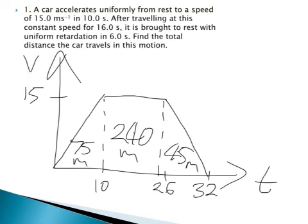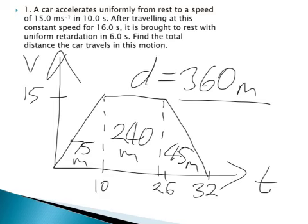All we need to do now is simply add together 75 plus 240 plus 45, and we should get 360 metres. So the total distance is 360 metres.